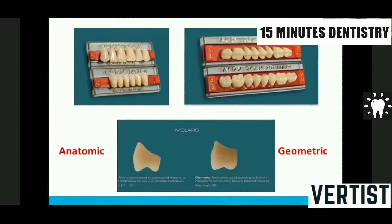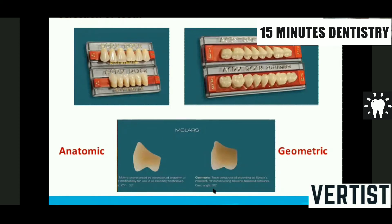When you look at a teeth set during arrangement, you see two numbers — one on the left side and one on the right side. The left side number denotes the shade, and the right side denotes the nomenclature, for example D44. When considering molars, anatomic teeth have cuspal inclination of 25 to 33 degrees, while non-semi-anatomic or geometric teeth have 20 degrees cuspal inclination.